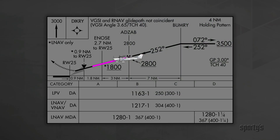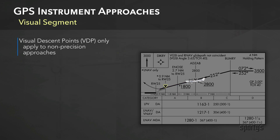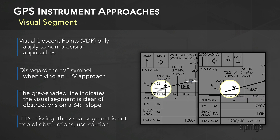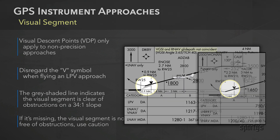Once you've passed the final approach fix, the next key point is the bottom of the approach. Remember that visual descent points only apply to non-precision approaches, so if you're flying an LPV approach, you can disregard that VDP symbol entirely. On RNAV approaches, a gray shaded line from the MDA to the runway indicates that the visual segment below the MDA is clear of obstructions on a 34-to-1 slope, roughly 200 feet at 1 mile. If you don't see a gray line, the visual segment is not free of obstructions — meaning you need to be in good visual conditions before descending to the runway, and you should not follow the advisory glide slope all the way to the threshold.